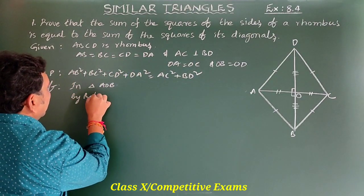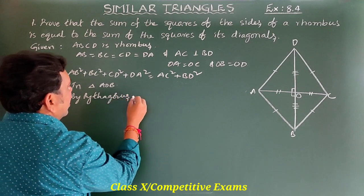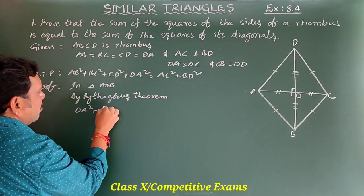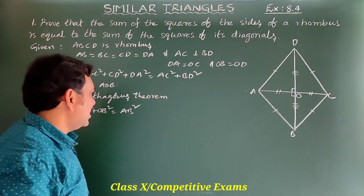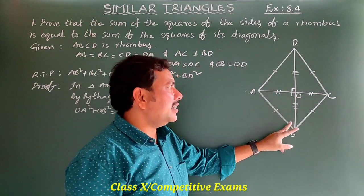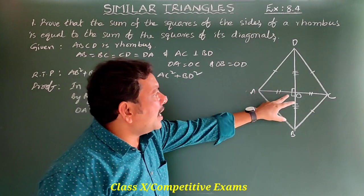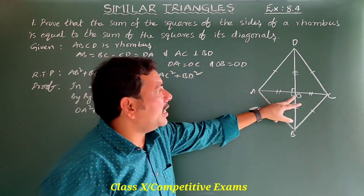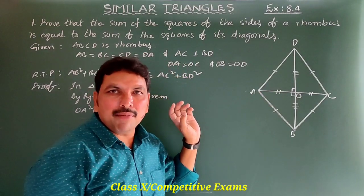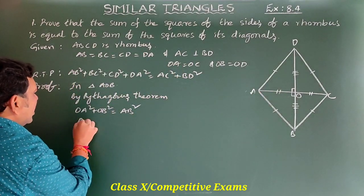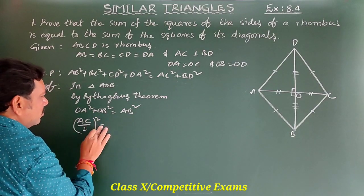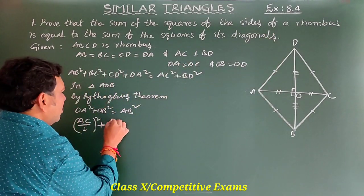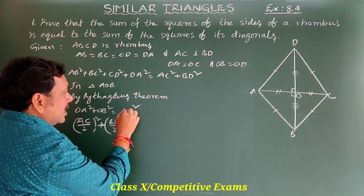By Pythagoras theorem, OA² + OB² = AB². Here, OA = AC/2 and OB = BD/2. So, (AC/2)² + (BD/2)² = AB². That gives AC²/4 + BD²/4 = AB², which implies (AC² + BD²)/4 = AB².